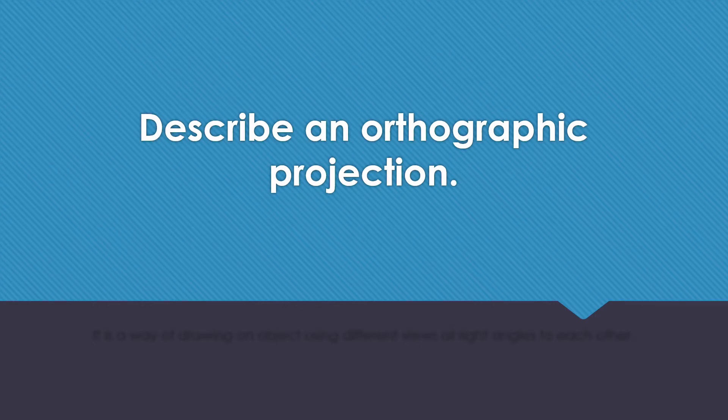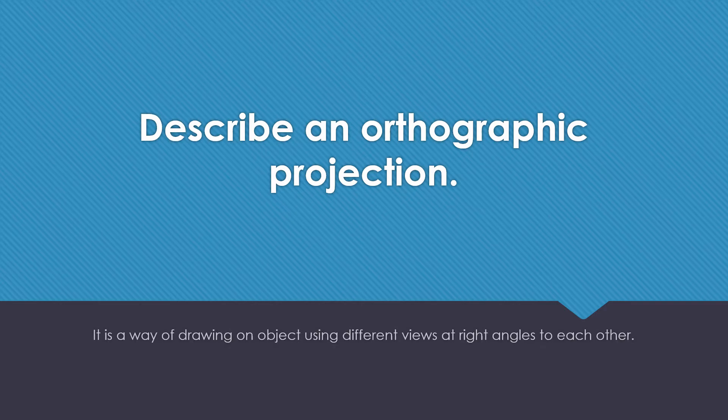Describe an orthographic projection. It is a way of drawing an object using different views at right angles to each other.